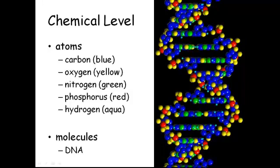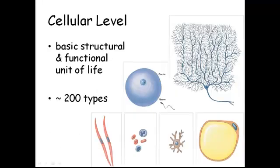The fundamental building block of all chemicals — whether it's water, DNA, or lactose — all of these chemicals are made out of atoms. This is a model of DNA: carbon, oxygen are the yellow ones, nitrogen is green, phosphorus is red, and hydrogen is kind of aqua. You put those different atoms together in the right arrangement and you get DNA. DNA is a molecule, so even at the chemical level you have levels of organization. Atoms put together make molecules, and you put the right chemicals together to get a cell. The chemicals themselves are not alive — DNA by itself is not alive.